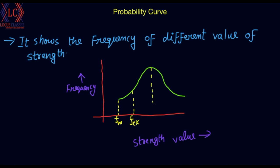These are different strength values. That is F-mean, and that is F-maximum — that is the maximum strength value. That is the minimum strength value.